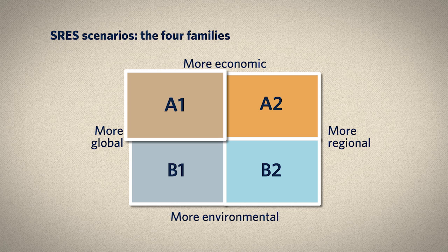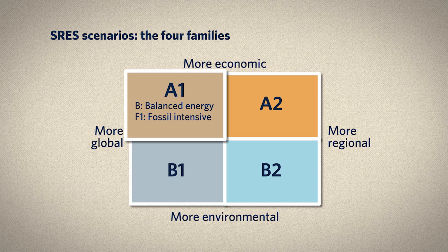Within the A1 family, there are three scenarios that differ in how we use energy in the future. One represents a balance between fossil and non-fossil energy. Then there's A1F1, which describes a future with intensive use of fossil fuels — typically nicknamed the business-as-usual scenario. And there's A1T, in which we transition to non-fossil energy sources. There are no probabilities nor preferences attached to any of the scenarios; the attempt is to capture a range of possibilities.